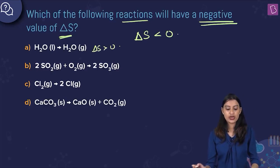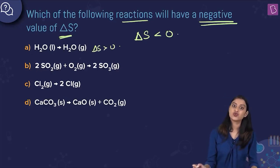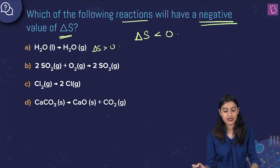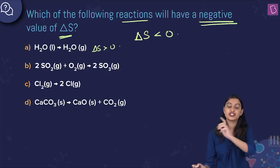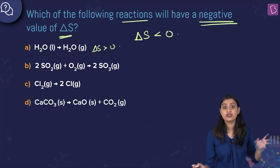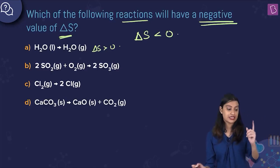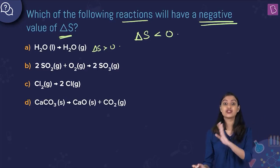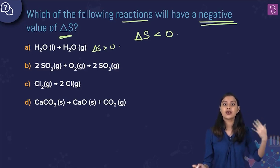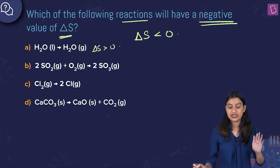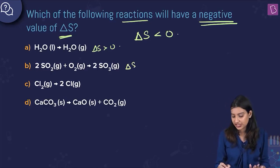Option B: 2SO2 + O2 giving 2SO3. Before the reaction you have 3 moles of gas; after the reaction you have 2 moles. The number of gaseous moles is reducing from 3 to 2, so entropy reduces, meaning the entropy change is negative.